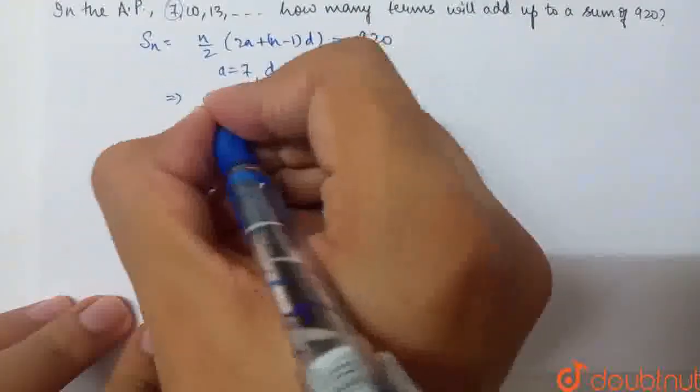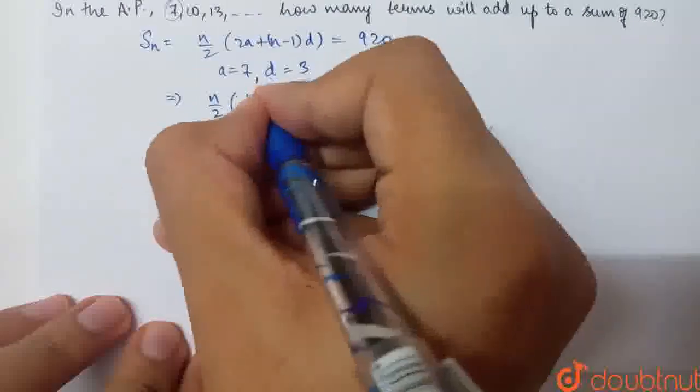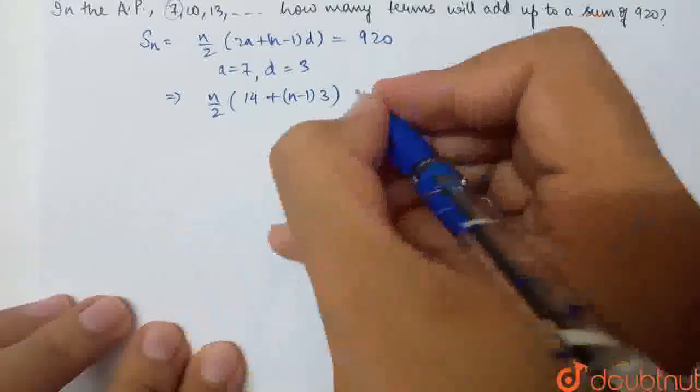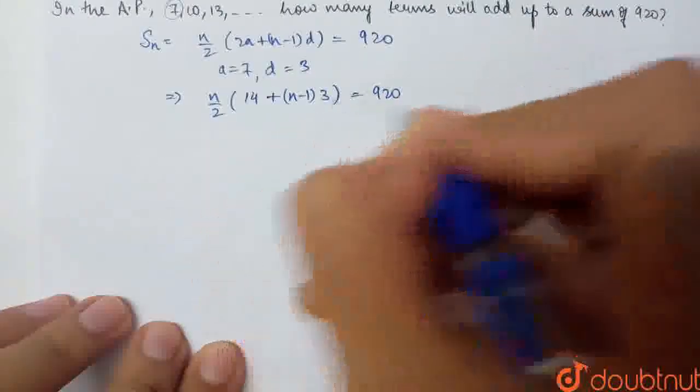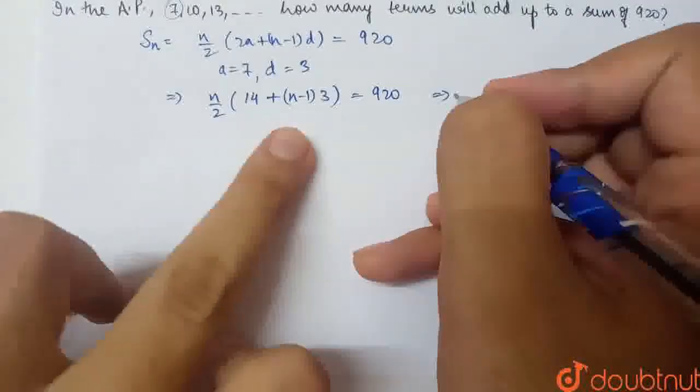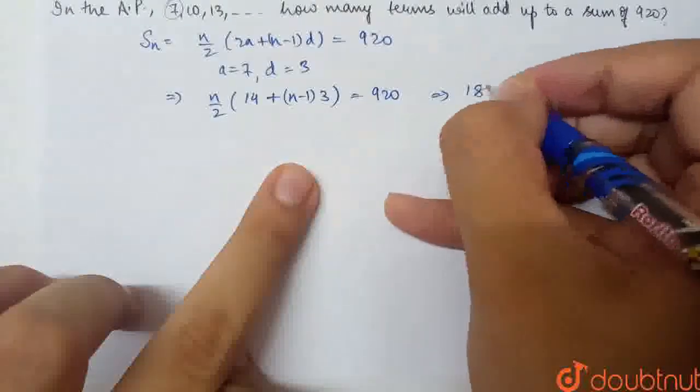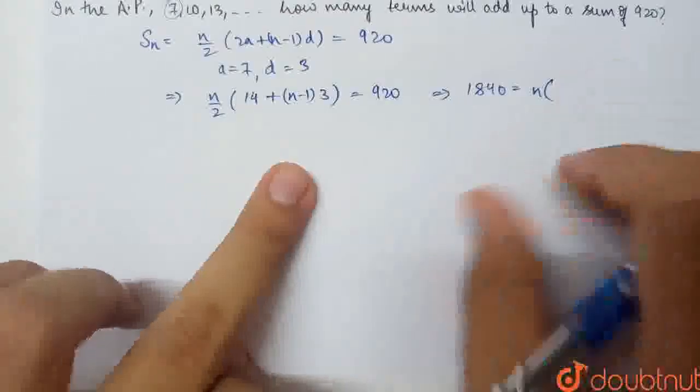I have n/2 × (2a, that is 14, plus (n-1) × d). This should be equal to 920. If I cross multiply this, 1840 is equal to n times...